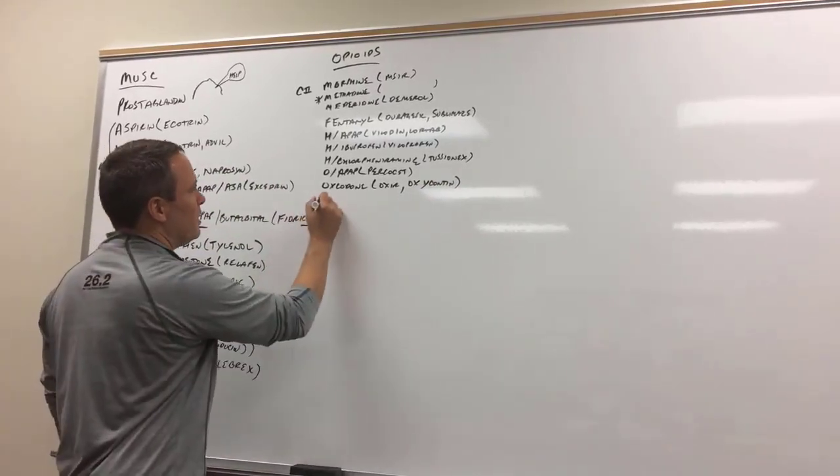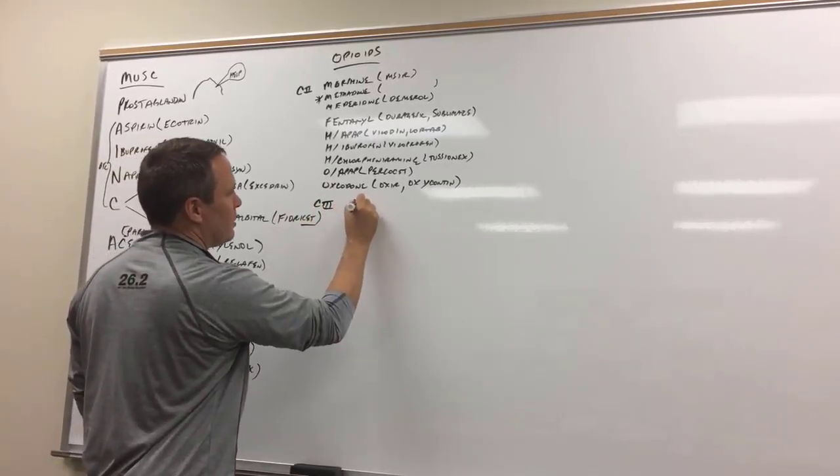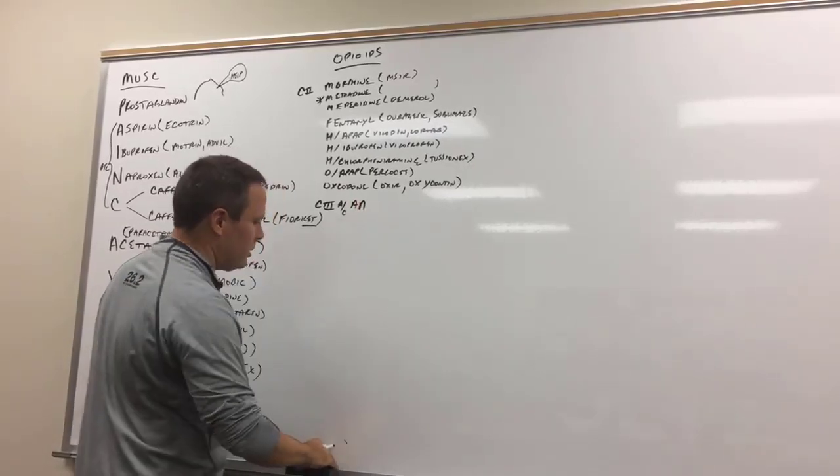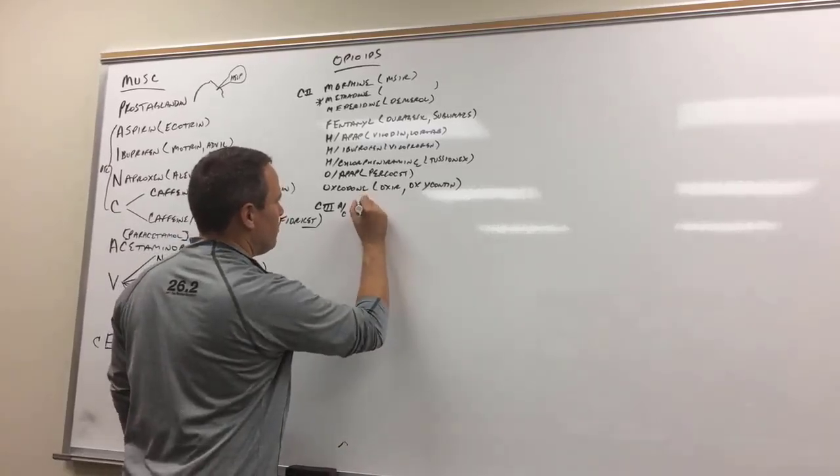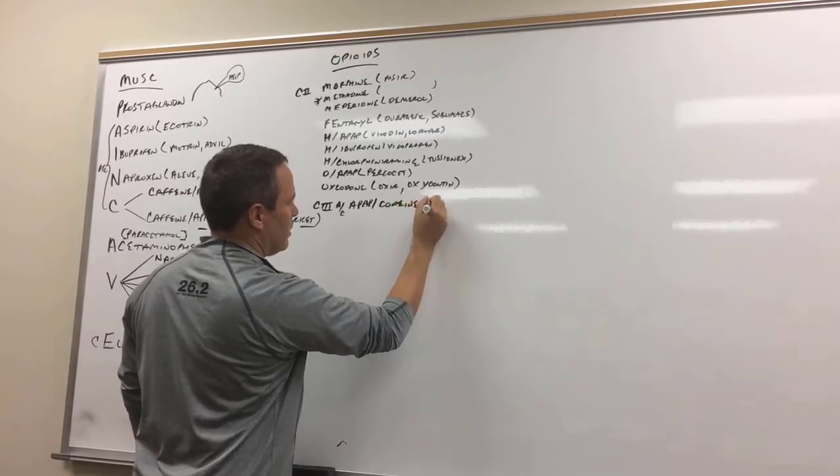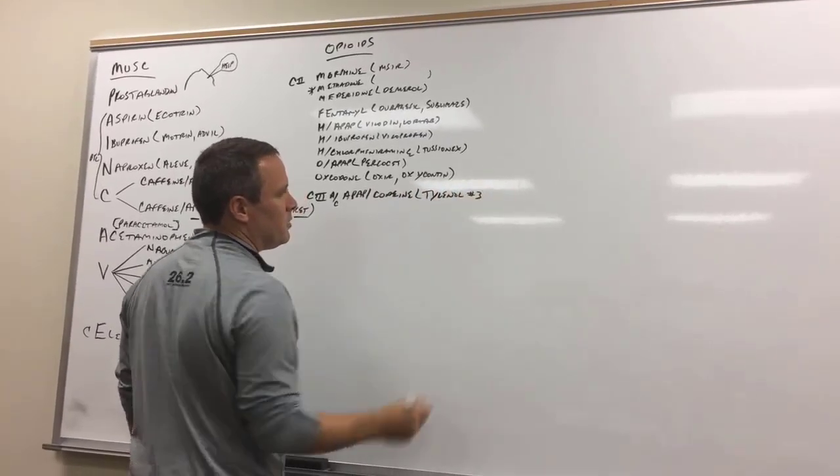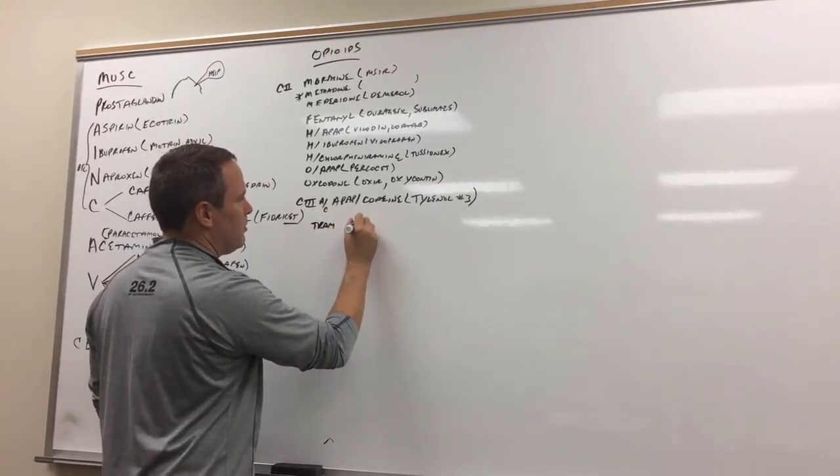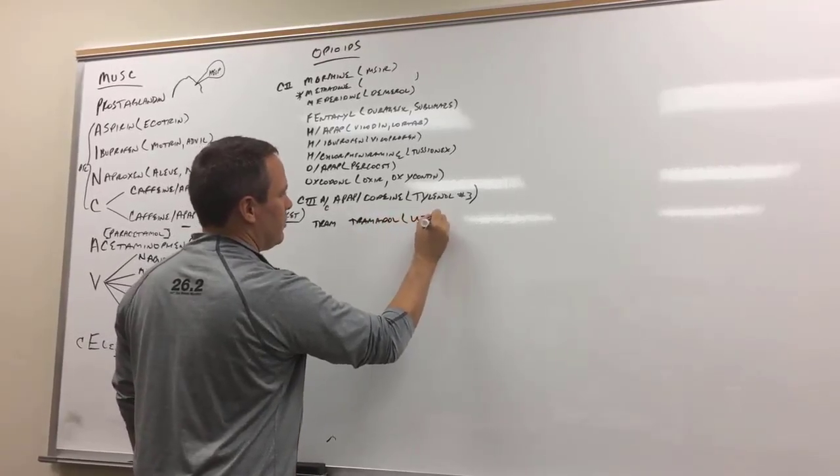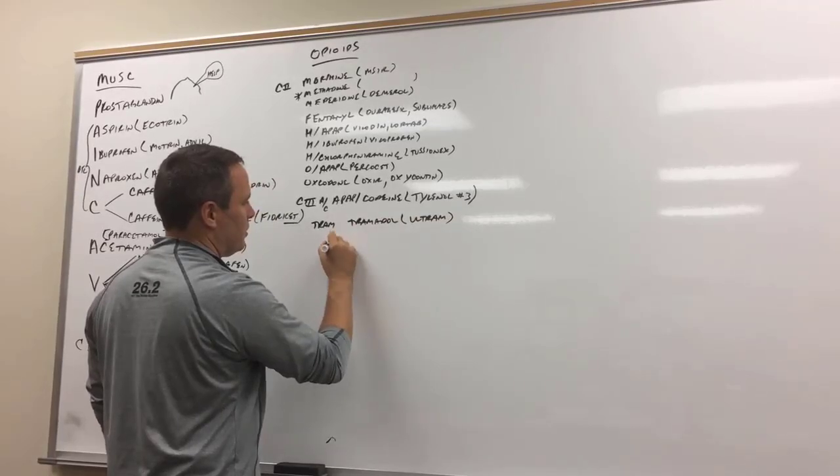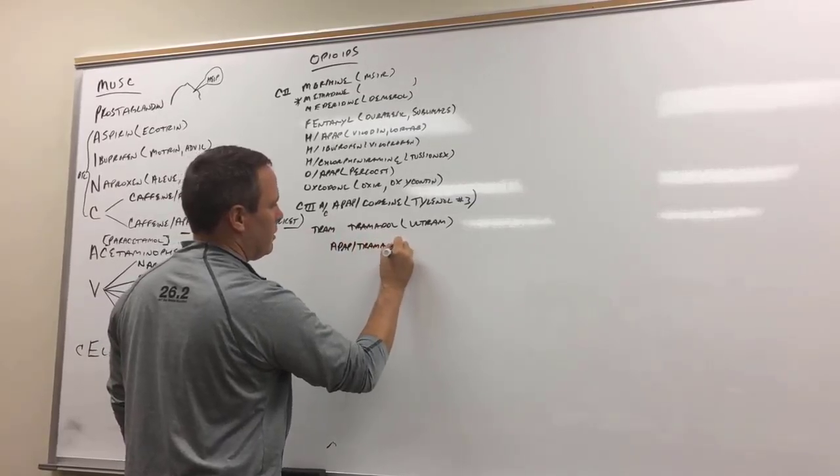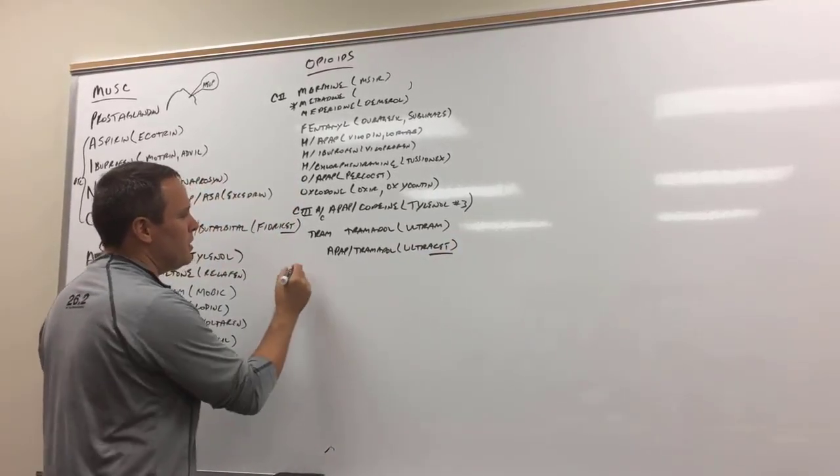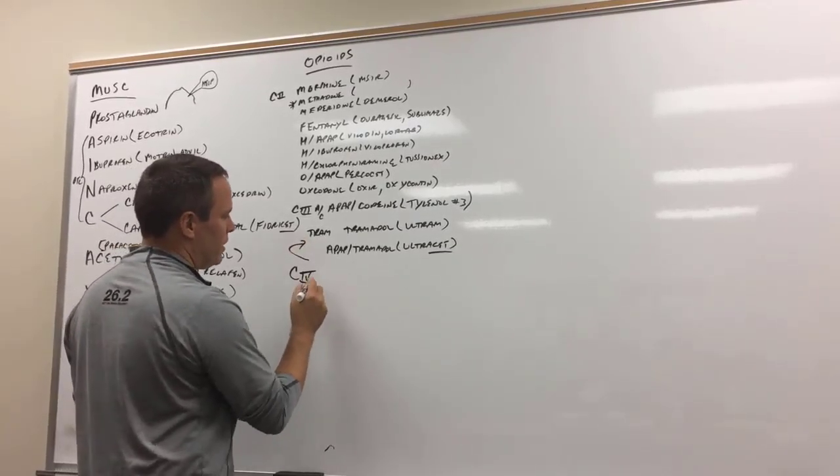C3, I think of air conditioning, so AC for acetaminophen. APAP with codeine, and that's Tylenol 3, but there's a number 2, a number 4, and they have to do with number of grains. And then I think of a tram with air conditioning for tramadol, which is Ultram. And then they added acetaminophen to it, so APAP with tramadol, and that's cleverly named Ultracet for the acetaminophen. Then C4, that's the tramadol.